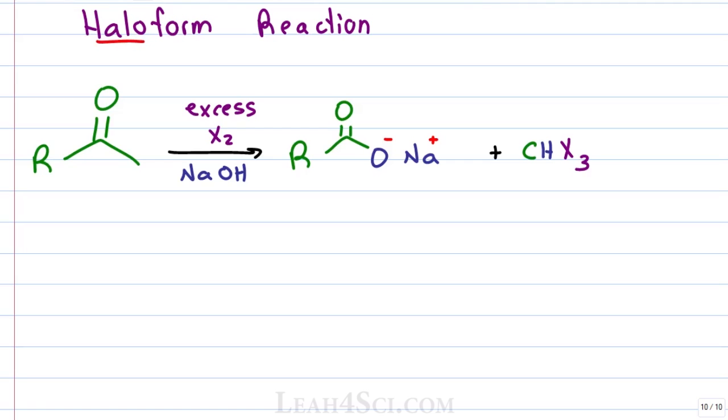Haloform comes from halo which is halogen. In this case we have X2 which can be Cl2, Br2 or I2. Form is the prefix for a one carbon group or molecule. Think of formic acid, formaldehyde, these are one carbon groups.